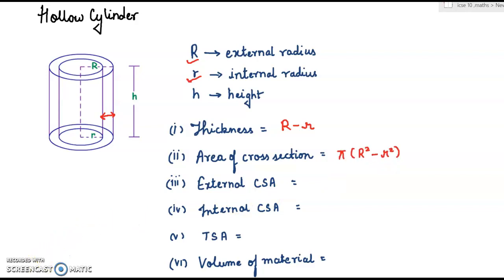External CSA, that is external curved surface area. Now normally the curved surface area is 2πrh, so we will just write 2πRh. In this case, capital R will be placed because we are talking about external CSA. And internal means the small r will be placed, 2πrh, radius of internal cylinder.